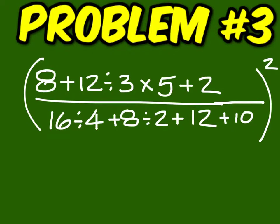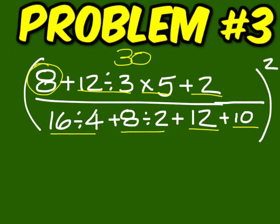On the top, this is 8, and then you have 4 times 5 is 20, so you have 28 plus 2 is 30. On the bottom, that's 4, that's 4, so that's 8 plus 12 is 20 plus 10 is 30. 30 over 30 is 1, and if you square it, you still get 1.